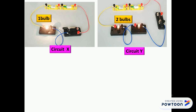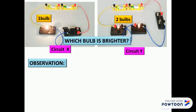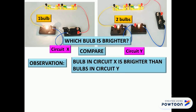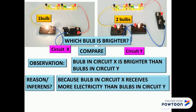For observation, which bulb is brighter? The answer is the bulb in circuit X is brighter than the bulb in circuit Y, because the bulb in circuit X receives more electricity than the bulb in circuit Y.